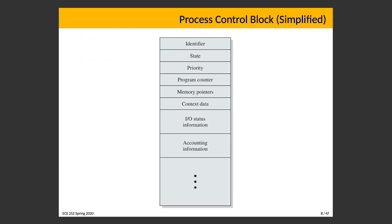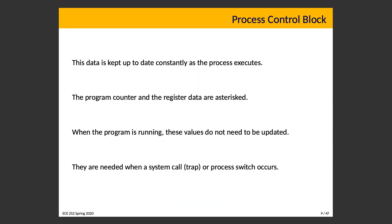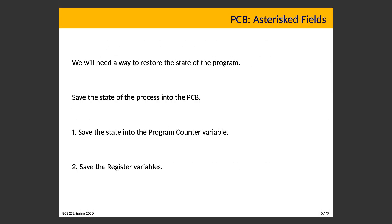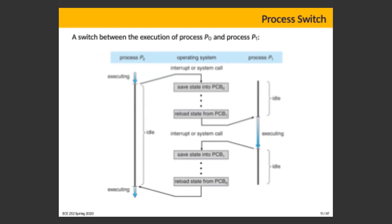A simplified visual representation of the process control block is just a sequence of fields — as many as are needed. Everything is kept up to date with the exception of program counter and register data, which have asterisks next to them. When the program is running, you don't update those values every time. However, they will be used when a system call or process switch occurs — this is how we effectively store and restore the state of the program.